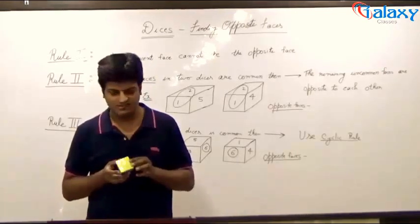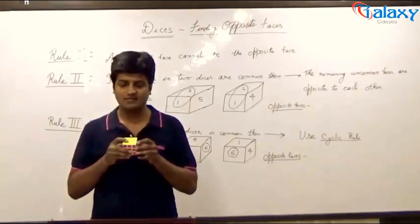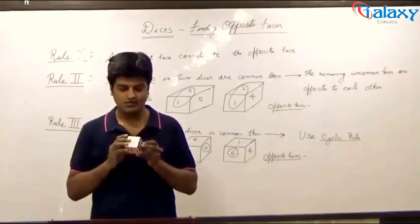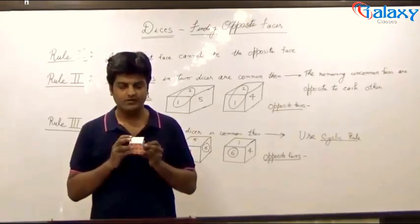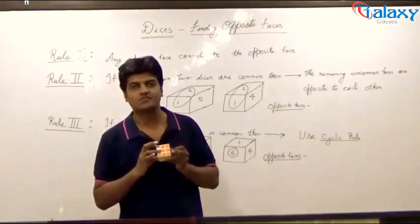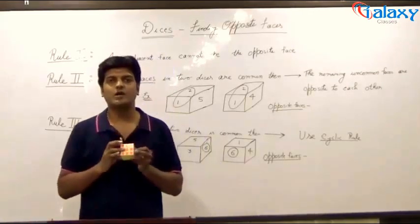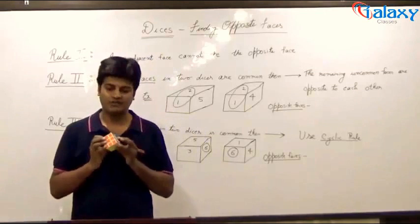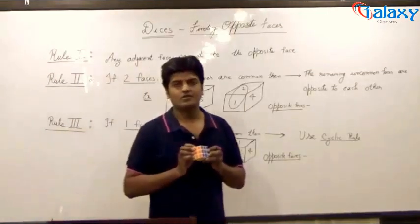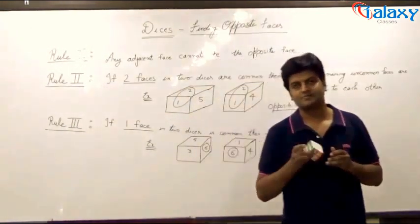Say, in this dice the blue face has yellow, red, white and orange as its adjacent faces. Hence, naturally, they cannot be opposite to the face that is blue. The face which is opposite to blue is green.